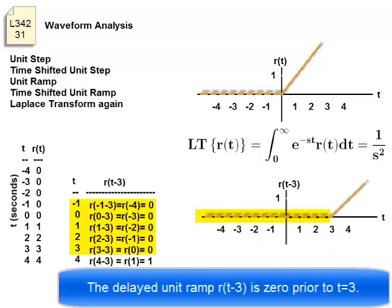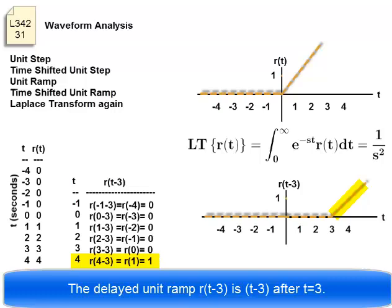The delayed unit ramp is zero prior to t equals three. The delayed unit ramp is t minus three after t equals three.